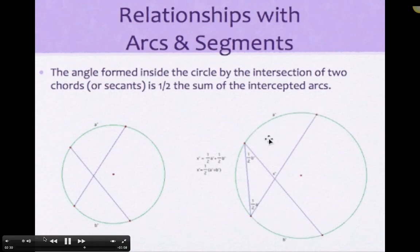Therefore, using our relationship with inscribed angles, this would be one half A, this would be one half B. Once again, we have an exterior angle that would equal the sum of the remote interior angles. So X would equal one half B plus one half A or one half times the sum of A and B.